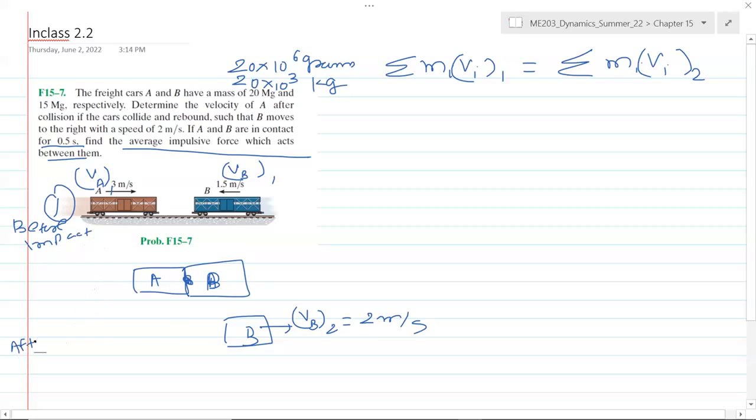This is after impact. Now we do not know whether A will rebound or move towards the left direction, or if it will continue towards the right direction. For now we assume that A moves towards the right direction, so v_A2—this is what we have assumed.